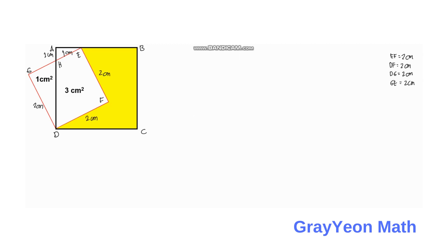Next, we focus on the line GE. We know that GE equals 2 centimeters. But GE equals GH plus HE, so GH equals GE minus HE, which gives GH equals 2 minus 1, so GH equals 1 centimeter.